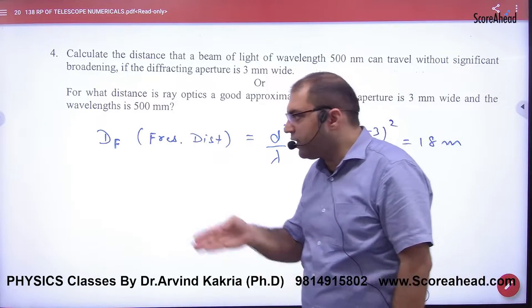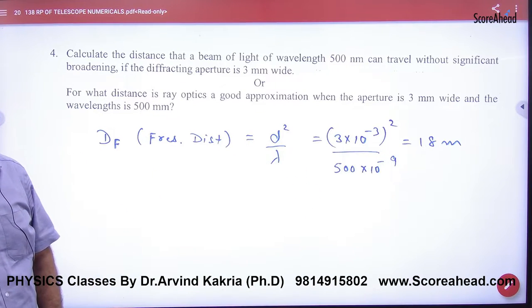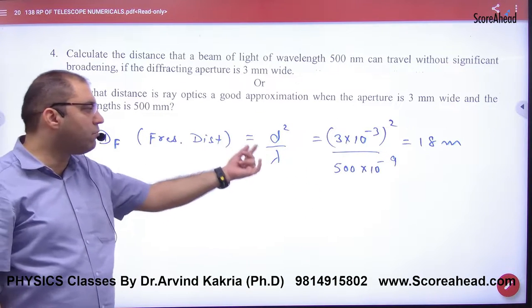Now, they say that distance between the screen and the slit. They call it Fresnel distance. So Fresnel distance is d squared over lambda. Answer. Same question.